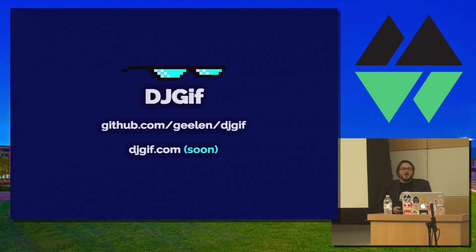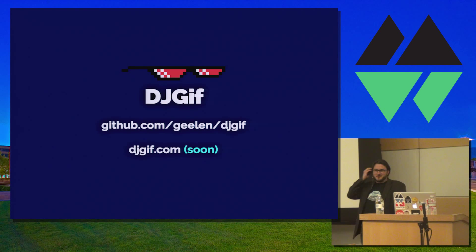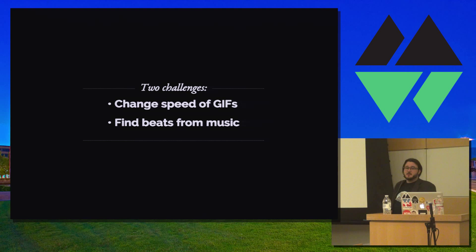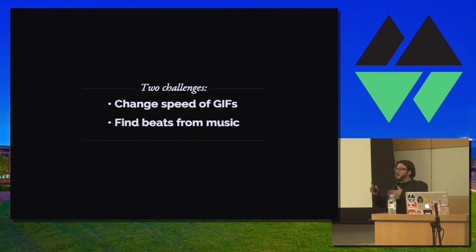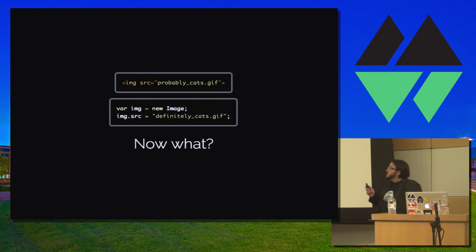I made that logo — if you have any criticism I'll be crushed. It isn't quite launched yet and it requires a really strong internet connection, so I'm not going to demo it. But it's all open source and it's up there if you like. Basically DJ GIF is audio playlists with GIF City on top. I want to talk about a couple of things I had to do to accomplish this, because it turned out to be a lot harder than I expected. The first is to change the speed of the GIF. The second is to know where the beats are in a song.